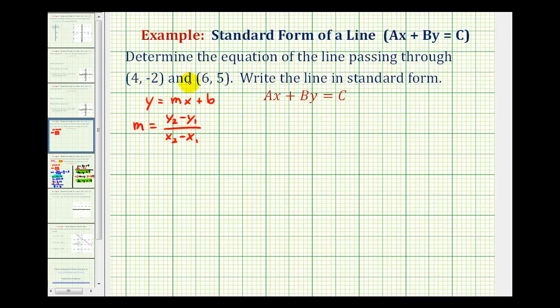If we call these the ones and these the twos, that means this will be x₁, this will be y₁, and this will be x₂, and this is y₂. So for our line, y₂ minus y₁ would be five minus negative two, divided by x₂ minus x₁, that would be six minus four.